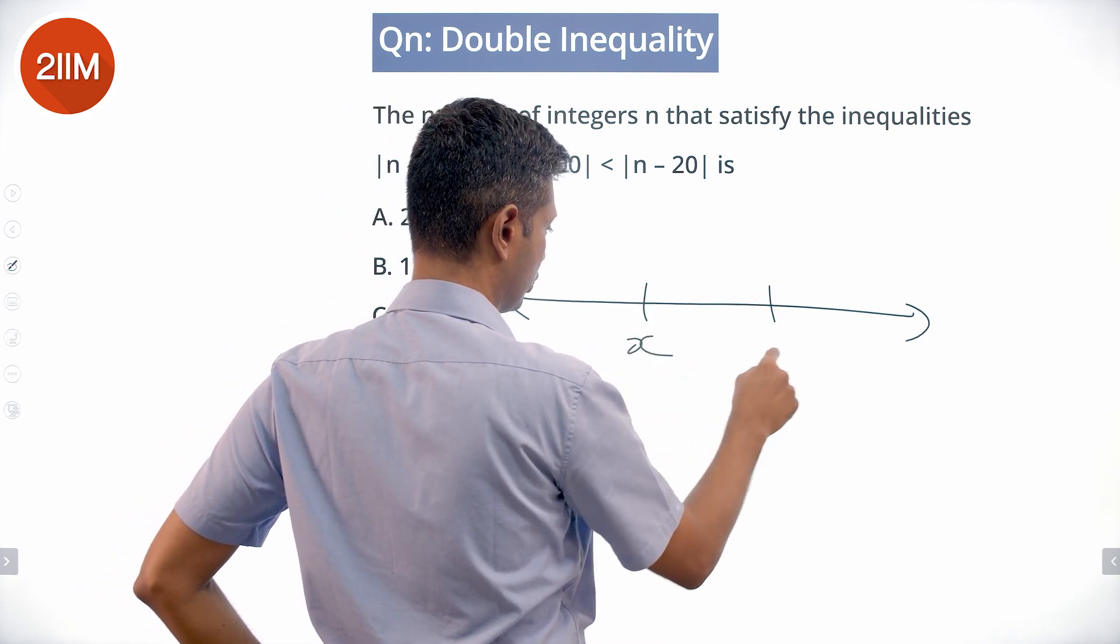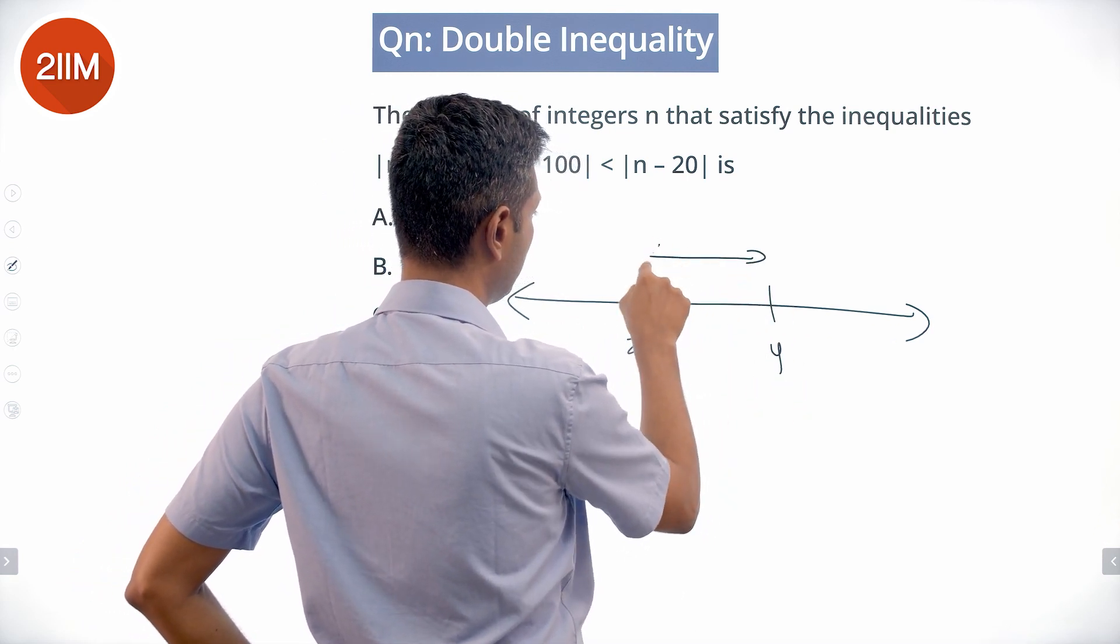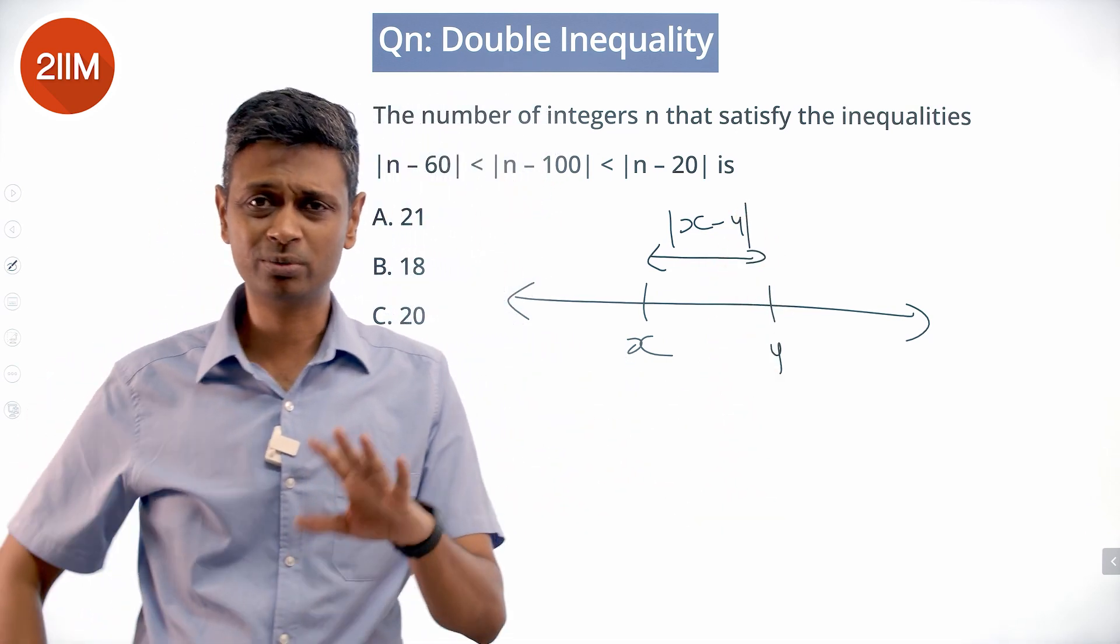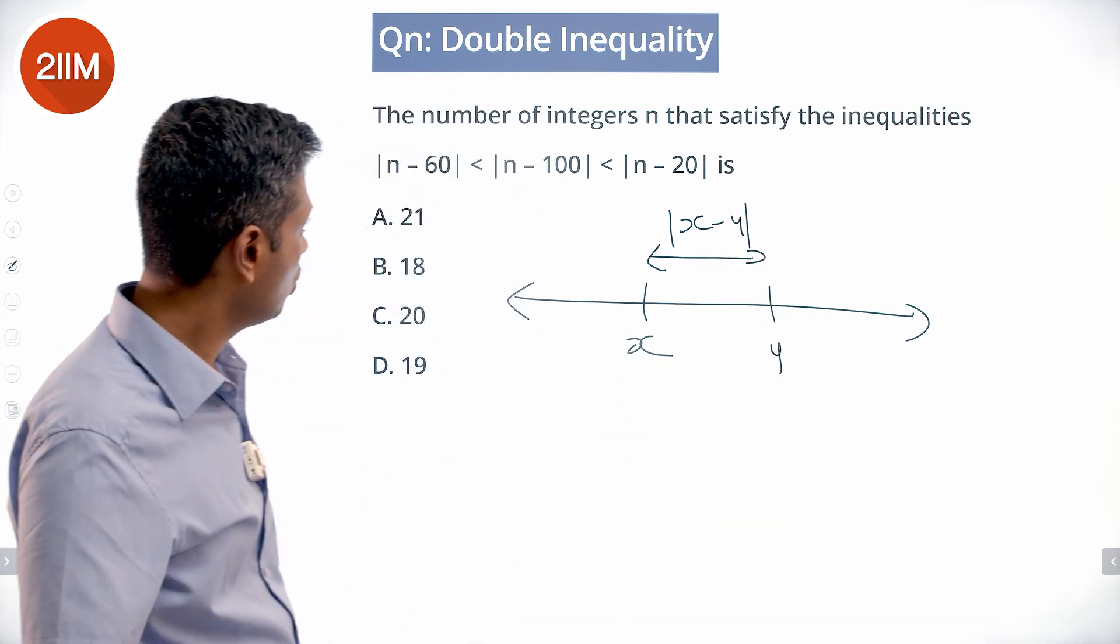The distance between two points on the number line is |x - y| or |y - x|, one of the two doesn't matter. And so now we're going to treat this as this inequality and then this inequality, one at a time.